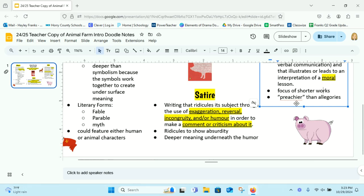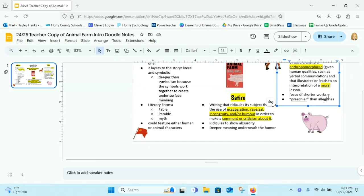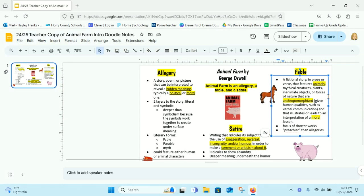Sometimes with fables, they tend to be preachier than allegories. This is more about human life and the way individuals should live, whereas allegory is more like a comment about society as a whole.